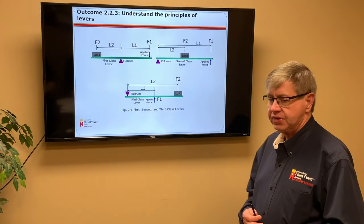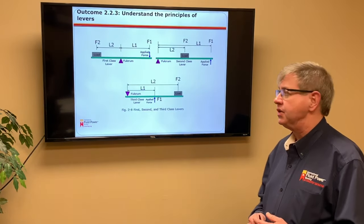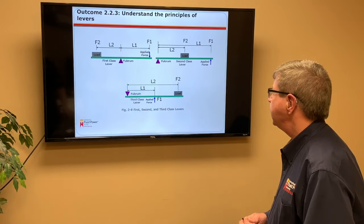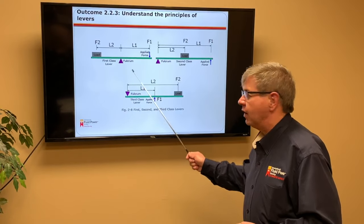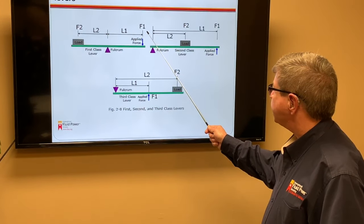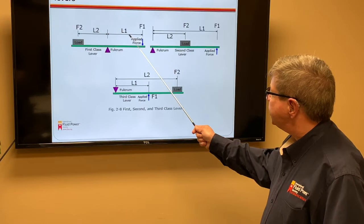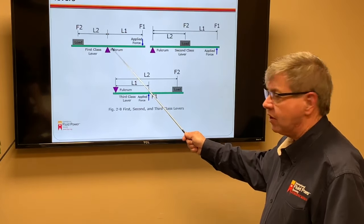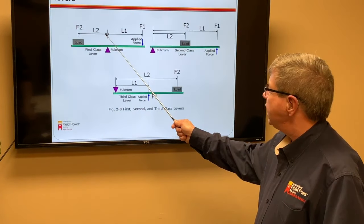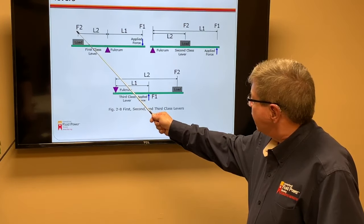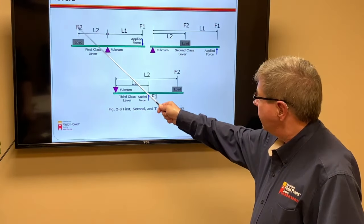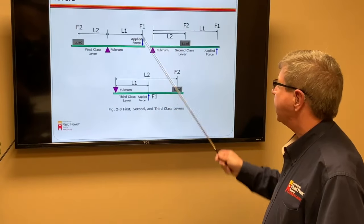This illustration here shows that we define levers in three classifications. There is what is known as a first class lever. You can see quite simply from the equation that we just had, the applied force F1 times this distance to the fulcrum point, which is our pivot point, must equal the distance from the pivot point to the load and the load value in order for this to be balanced.